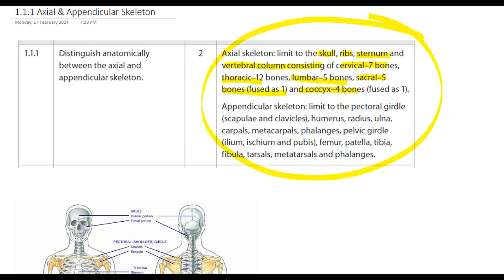And then our appendicular skeleton, our pectoral girdle, so scapula and clavicle, humerus, radius, ulna, carpals, metacarpals and phalanges, and then our pelvic girdle, and we need to know ileum, ischium and pubis, femur, patellar tibia, fibular tarsals, metatarsals, and phalanges.